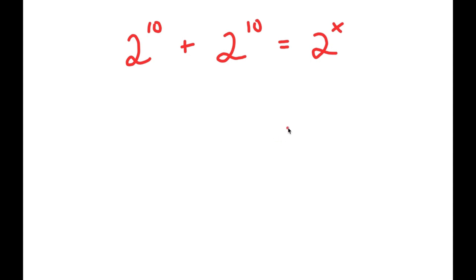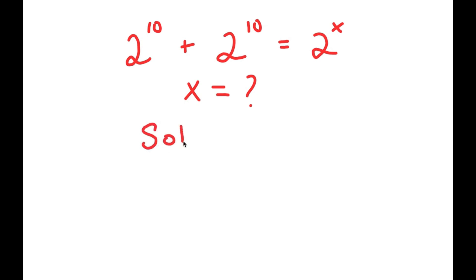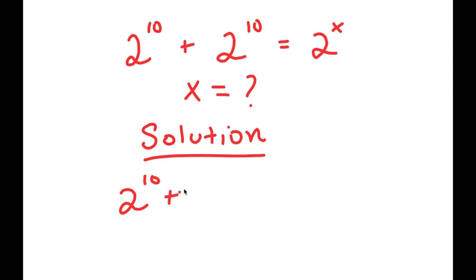In this problem, I have 2 to the power of 10 plus 2 to the power of 10 is equal to 2 to the power of x. So I want to find the value of x here. For my solution, I'll start by rewriting the equation: 2 to the power of 10 plus 2 to the power of 10 is equal to 2 to the power of x.